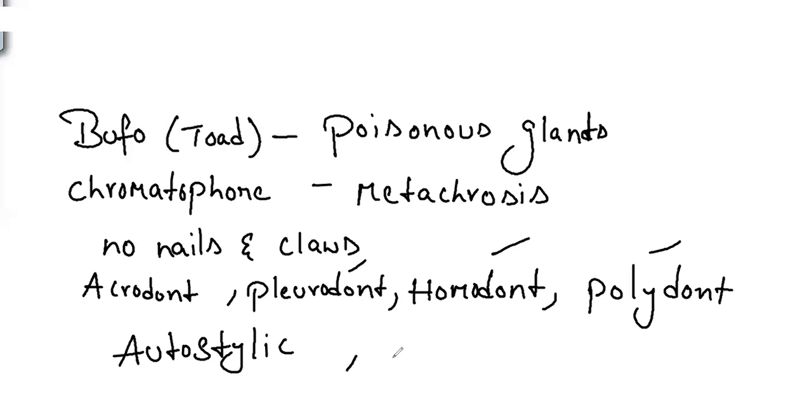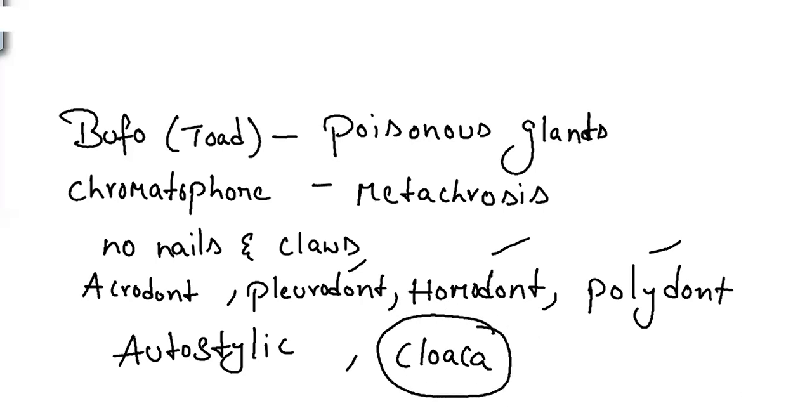A common chamber called the cloaca is present, where the alimentary canal, urinary tract, and genital ducts all open into a single chamber. Cloaca is also found in reptiles. Respiration happens by gills in the tadpole larva stage, and also through skin, lungs, and buccopharyngeal cavity. The condition of having two nostrils is called dyrhinous, as seen in fishes and amphibians. Cyclostomes have only one nostril — monorhinous.